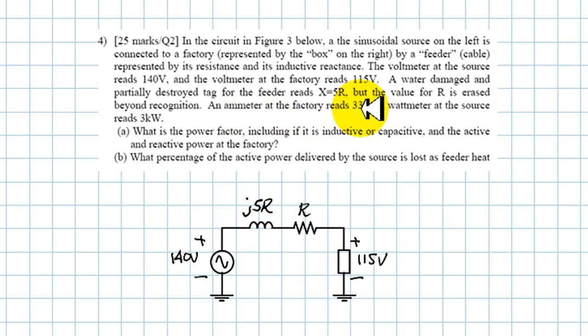An ammeter at the factory reads 33 amps, so we know that this current is 33 amps. A wattmeter at the source reads 3 kilowatts, so the power delivered by this source is 3 kilowatts. The question is, what is the power factor at the factory, including if that power factor is inductive or capacitive? And also, what is the active power and the reactive power at the factory? And then, what percentage of the active power delivered by the source, those 3 kilowatts, is lost as feeder heat losses?